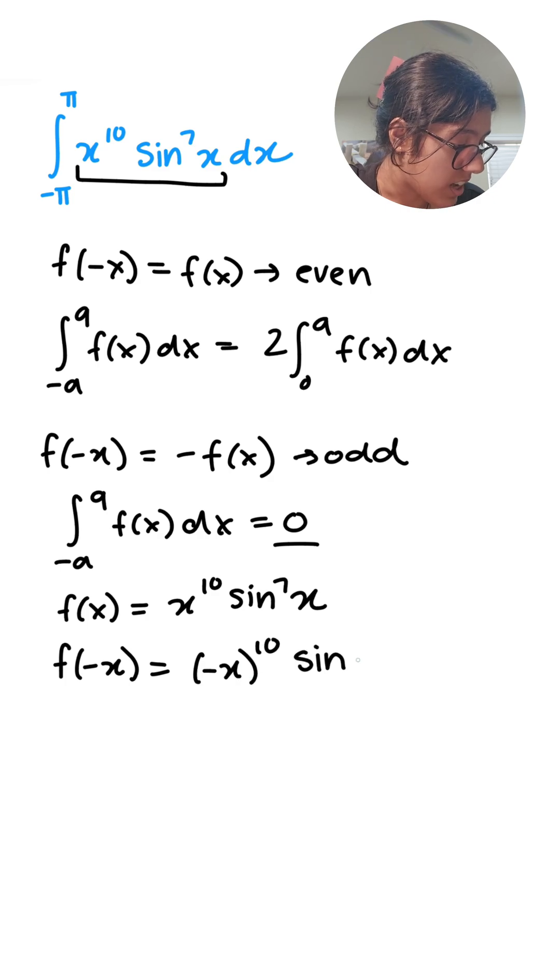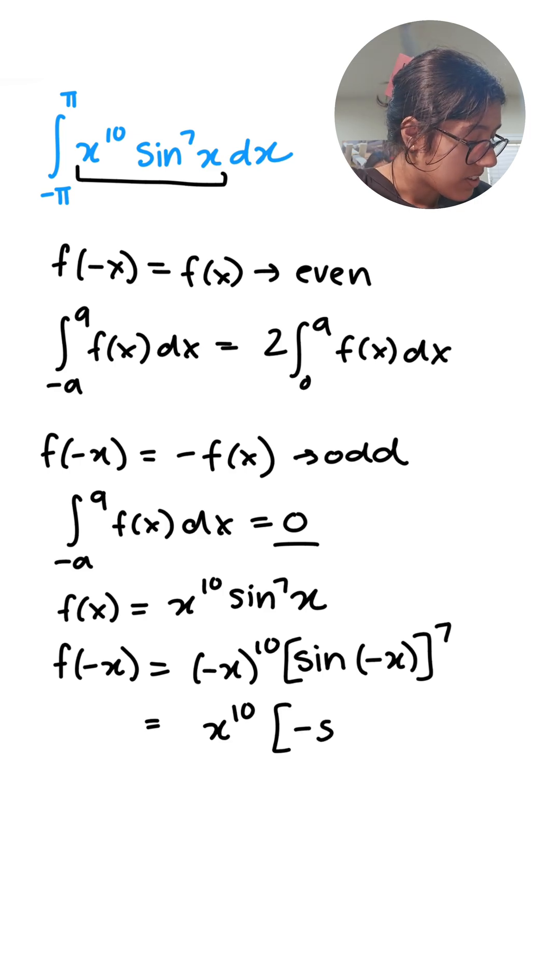I just rewrote it. I know that negative x to the power of 10 is x to the power of 10, and I know that sine of negative x is equal to negative sine x. And from here I know that negative to the power of 7 is going to be negative, so I'm left with negative f of x.